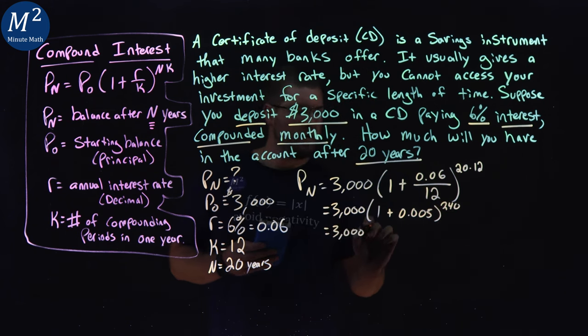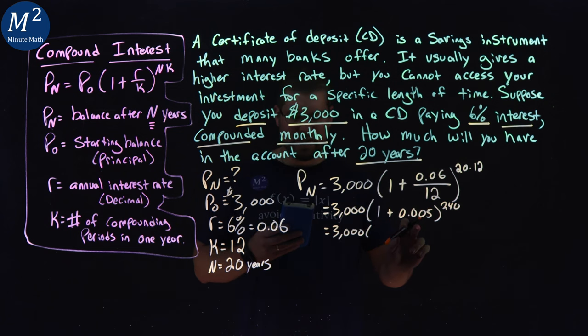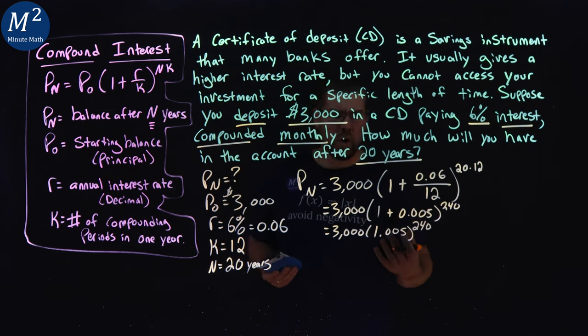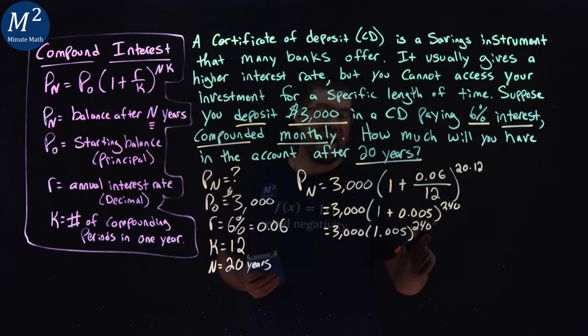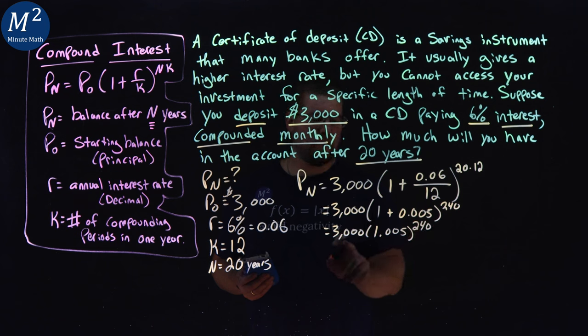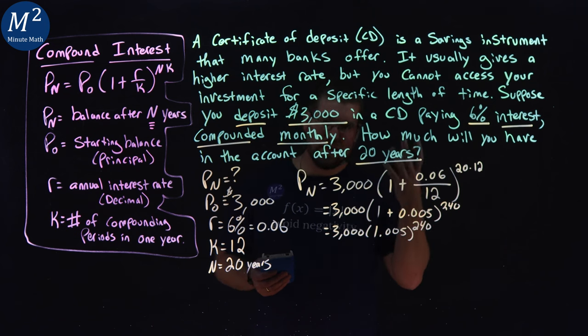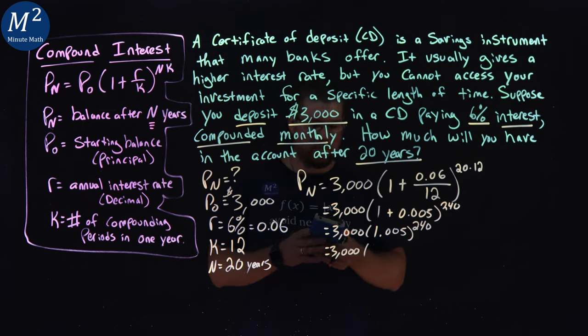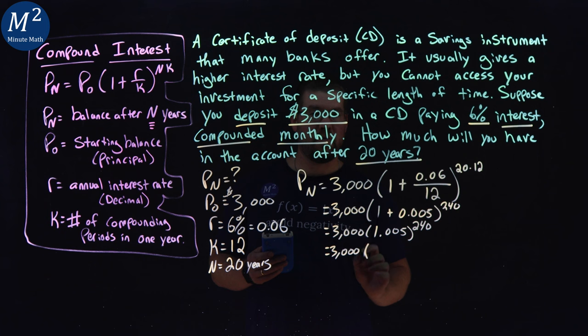Keep going. 3,000 here. 1 plus 0.005 is 1.005 to the 240 power. Now, order of operations tell us we have to do that exponent first. Be careful. A lot of students will multiply by 3,000 and then do it. Don't do that. 3,000 here times 1 point, and this is probably a long decimal, 1.005 to the power of 240. And we got a decimal that kind of goes on forever.